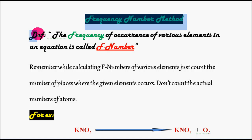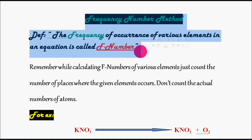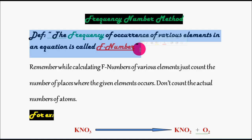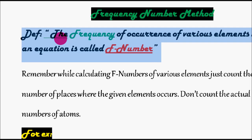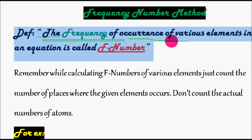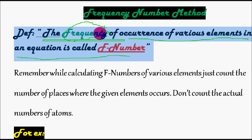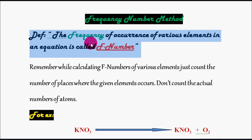Let us start the frequency number method. The frequency number method can be defined as: the frequency of occurrence of various elements in an equation is called the frequency number. So, how frequently an atom is being repeated — how frequently it is appearing — that is called the frequency number of that element.